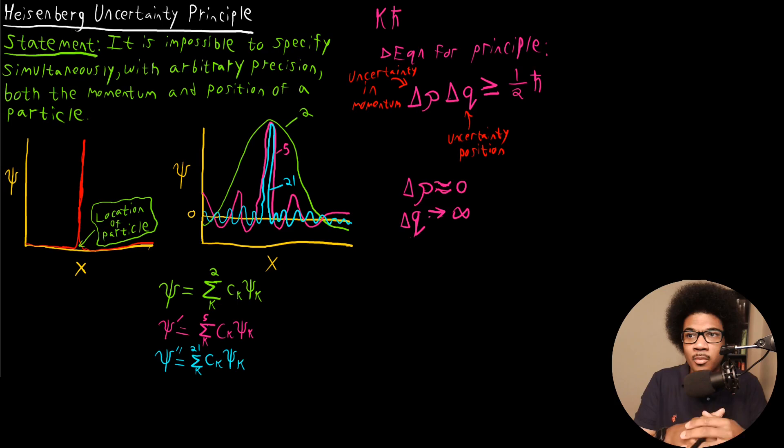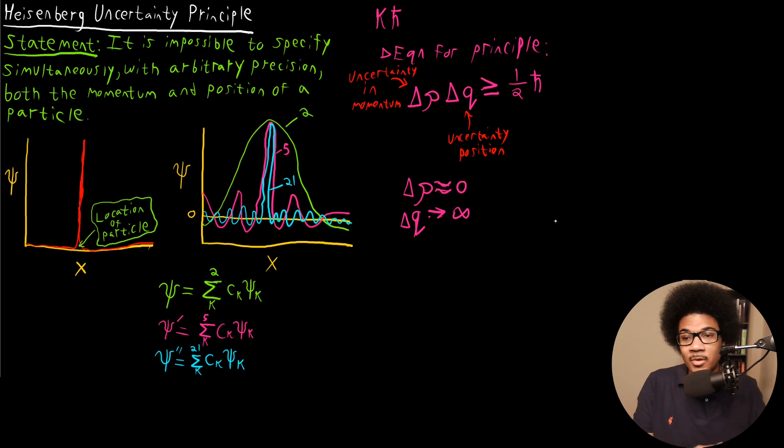That introduces the uncertainty principle. In the next video, I'm going to go through an example and show why the uncertainty principle is important at the quantum level, but not so important in our macroscopic world.